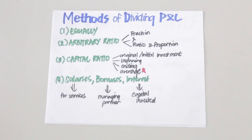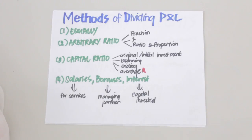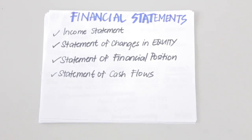An important point to remember is that salaries, bonuses, and interest allowances are not expenses — rather, they are a means of profit distribution. The division of profits and losses should be in accordance with the partnership agreement. When there is none, the division should be based on their capital balances.